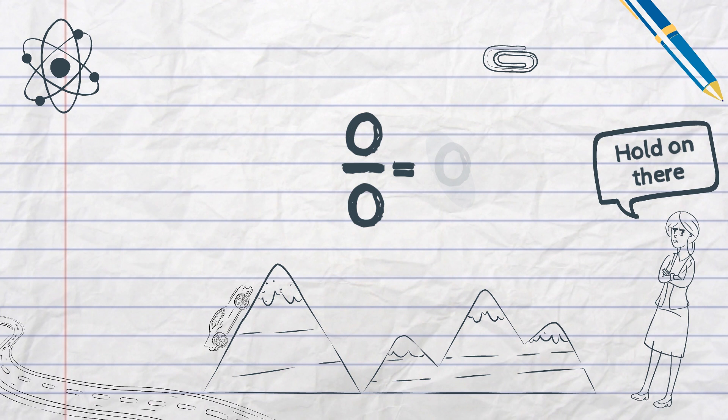To get to the bottom of this answer, it's important to understand exactly where the problem is. And once we do, we might be able to find just enough wiggle room to actually divide by zero.